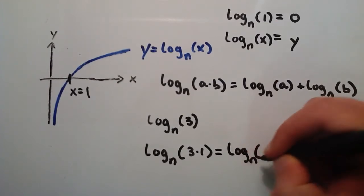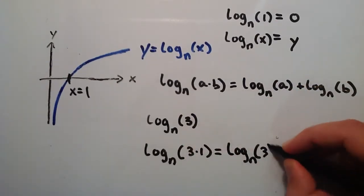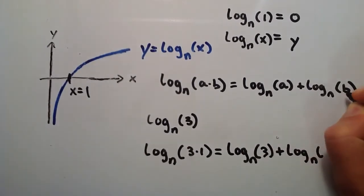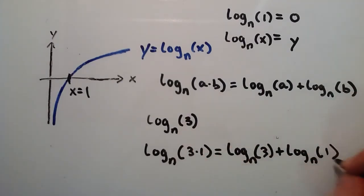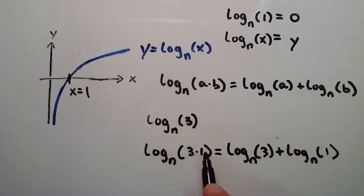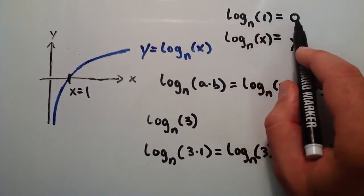So let's go ahead and split this apart. Log base n of a is our 3, plus log base n of b, which would be our 1. So by using this property here, we're saying that log base n of 3 times 1 is equal to log base n of 3 plus log base n of 1.